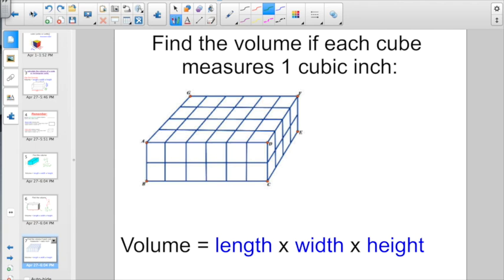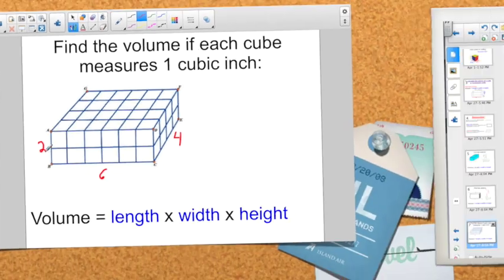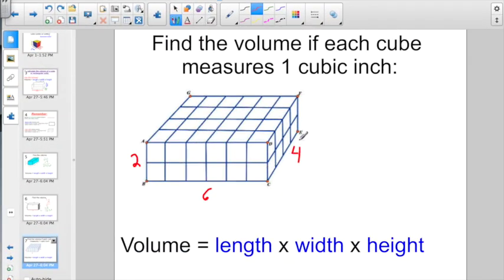Check out this one. There's no numbers at all. Find the volume if each cube measures 1 cubic inch. Well, how are we going to do this if there's no numbers? Well, we can count. We know that here's 1 inch, 2 inch, 3 inch, 4, 5, 6 inches for the length. Let's measure the width, 1, 2, 3, 4 inches for the width. And we have 2 inches over here for the height. So once I have all my dimensions counted here, it's just length times width times height.